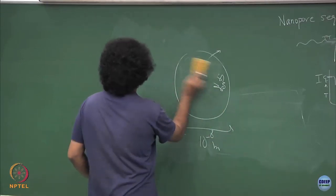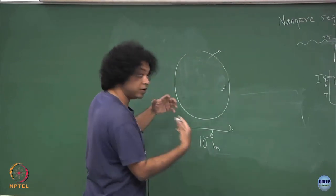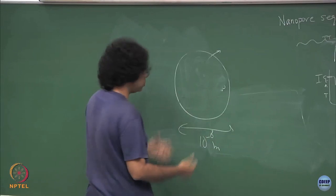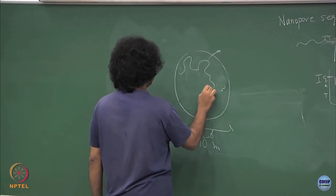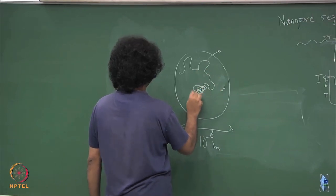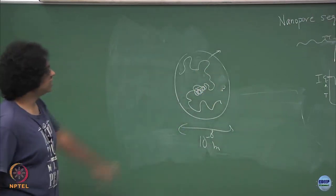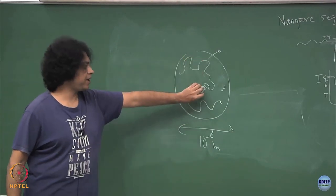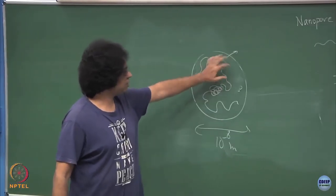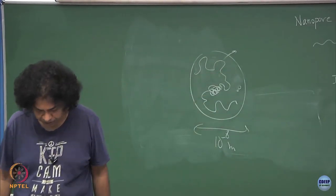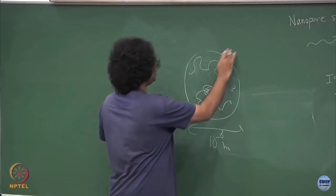We do not know how the cell packages it. We know there is some algorithm but we do not know what it is. Let us say somehow the cell has done it and here is my whole genome. Some parts are a little loose, some parts are a little tight — here it is coiled up a lot, here it is coiled up loosely.